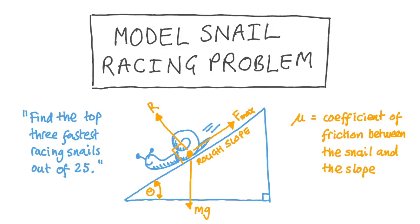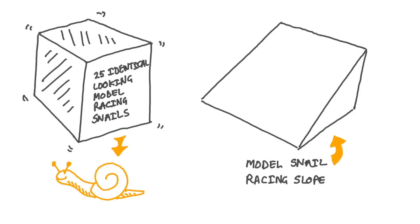But first, let's learn about model snail racing. Well, it's pretty straightforward, really. We have a set of 25 identical-looking wooden models of snails and a slope. Now, because it's pretty difficult to draw them identical-looking, I've put most of mine in a big box.